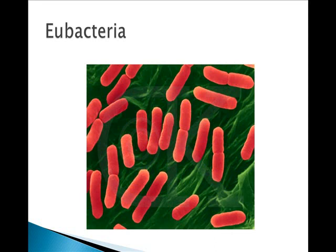Eubacteria are unicellular and prokaryotic — they're considered the common bacteria. They have peptidoglycan in their cell walls. Some examples include Streptococcus, E. coli, Staphylococcus, and Shigella.